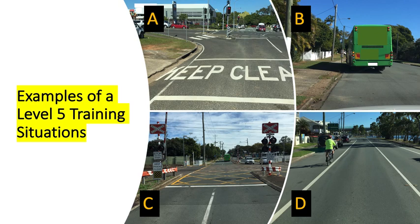Level 5 training situation examples: A — keep clear, traffic lights, pedestrian crossing. B — a bus stopped on the side of the road. C — a level crossing. D — a cyclist riding on the left side of the road. These situations can appear in lower levels, but at Level 5 the trainer is assessing the manner in which the learner driver identifies the hazard, responds to the hazard, and then records that performance and gives feedback.